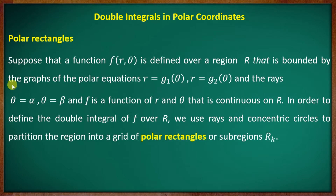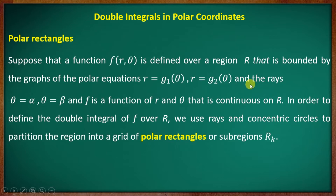Suppose that a function f(r, θ) is defined over a region R that is bounded by the graphs of polar equations r = g₁(θ), r = g₂(θ), θ = α, and θ = β, where f is continuous on R.